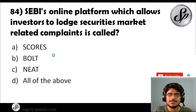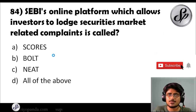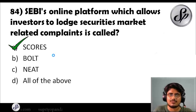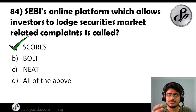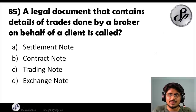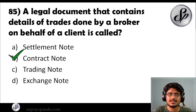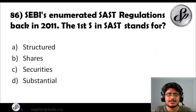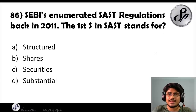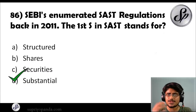Question eighty-four: SEBI's online platform which allows investors to lodge securities market-related complaints is called what? The answer is the SCORES platform. The full form is SEBI Complaints Redress System. Question eighty-five: a legal document that contains details of trades done by a broker on behalf of a client is called what? The answer is contract note. Question eighty-six: SEBI enumerated SAST regulations in 2011. The first S in SAST stands for what? It stands for 'Substantial' — full form is Substantial Acquisition of Shares and Takeover.